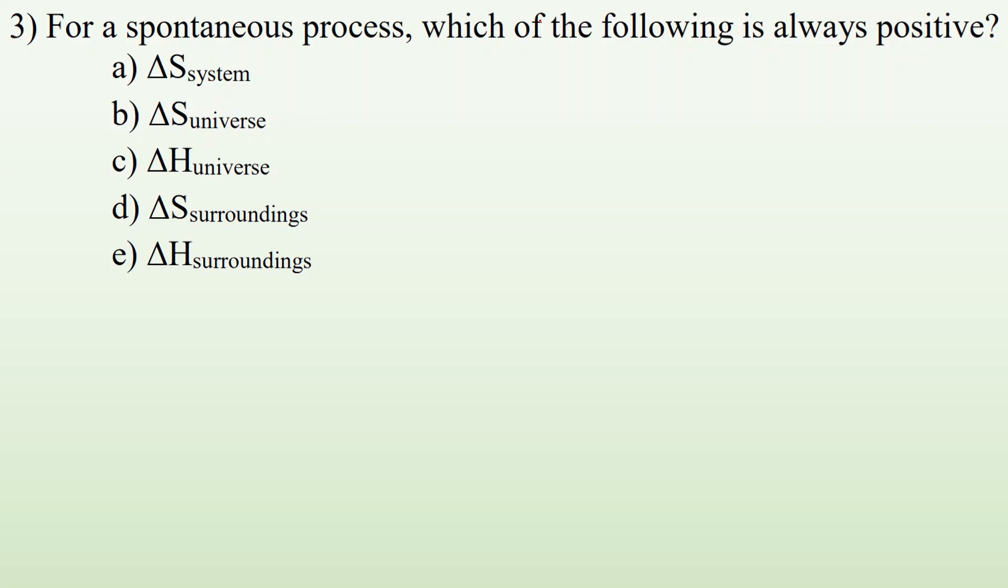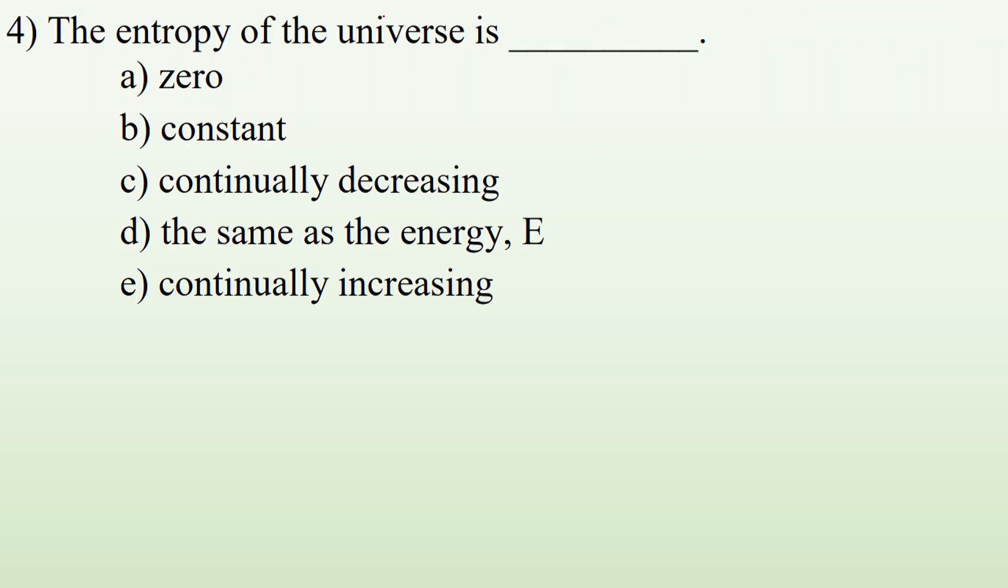All right, so let's take a look at number three. For a spontaneous process, which of the following is always positive? It's going to be the change in entropy for the universe. So the universe's disorder is always going up. So just think about, I tell my students, think about your room, right? So it seems to get messy all on its own, just by itself. The universe favors things getting messier. The entropy of the universe is continually increasing. It's always going up. The entropy is increasing over time.